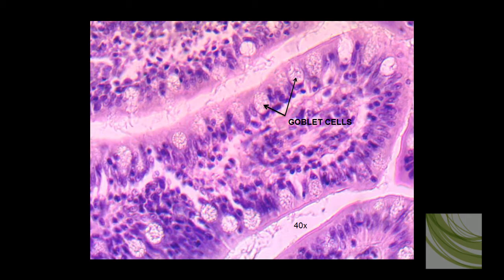Now here I'm using the 40X objective, and we can see a lot of detail here. Now what we want to primarily look at, we're going to look at these simple columnar cells. We'll see the nuclei, and these are goblet cells.